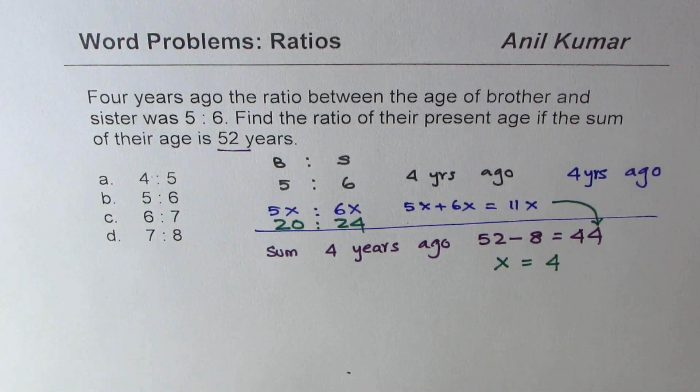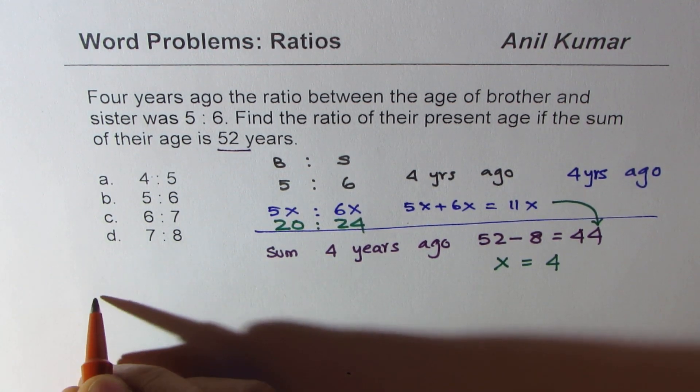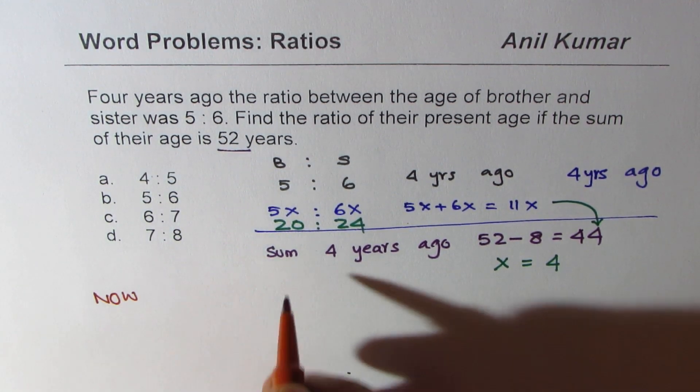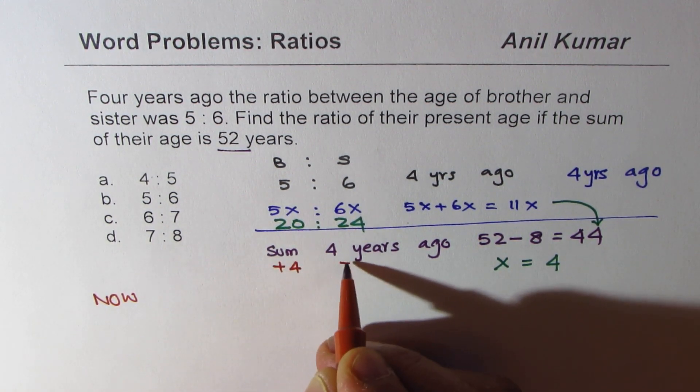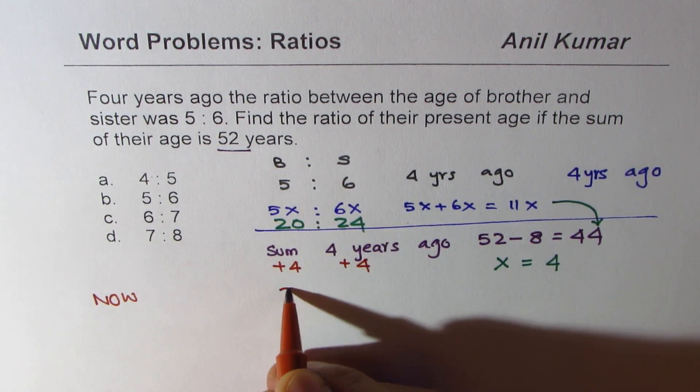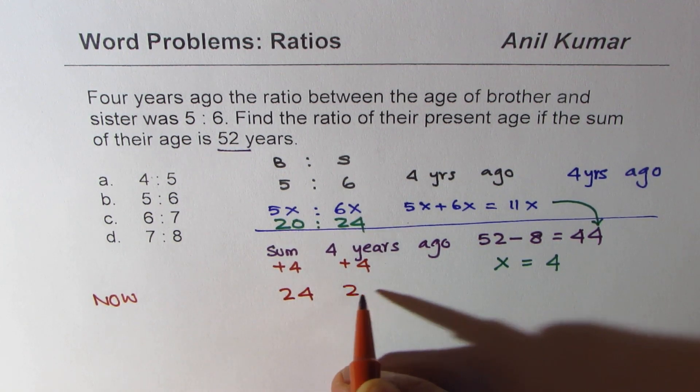So those are the ages four years ago. Perfect. Now what are their ages? Now we will be adding 4 to these ages. So we get 24 and 28.